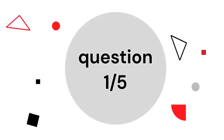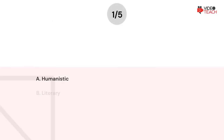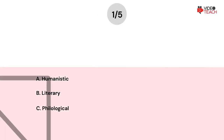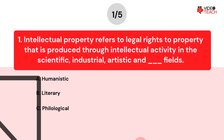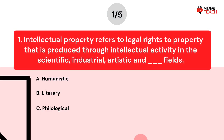Question number one. Intellectual property refers to legal rights to property that is produced through intellectual activity in the scientific, industrial, artistic, and blank fields.